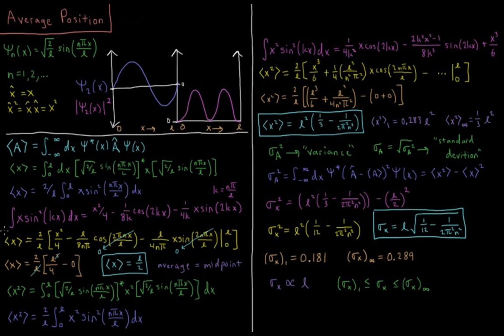And when I do that, this integral becomes x squared over 4 minus 1 over 8k squared cosine 2kx minus 1 over 4k x sine 2kx. So let's substitute some values in there. It's going to be 2 over l times x squared over 4 minus, k is n pi over l, l over 8n pi cosine 2 pi n x over l minus l over 4n pi x sine 2n pi x over l. We're going to evaluate this on our upper and lower limits, 0 and l.